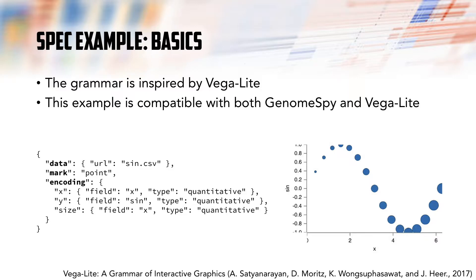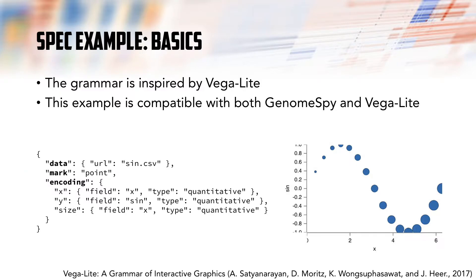Let's look at how Genome Spy visualizations can be specified. This is an example of a simple unit specification, which is a JSON document with a specific structure. The data element specifies what data to use — in this case, a CSV file with two columns, x and sin. Mark specifies which graphical marks to use: point. Encoding specifies how the fields in the data are mapped to different visual channels. Each datum or row is displayed as an instance of the point mark. This specification is actually compatible with both VegaLite and Genome Spy.